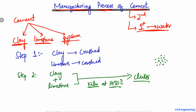Now we have clinker. In step number three, the clinker is cooled down. Since it is at a very high temperature coming out of the kiln, in the third step this temperature is cooled down.